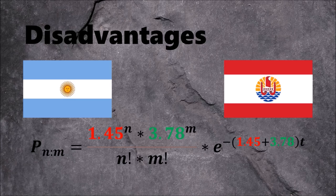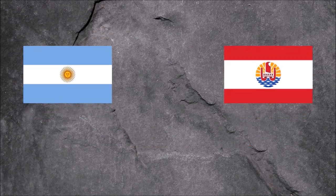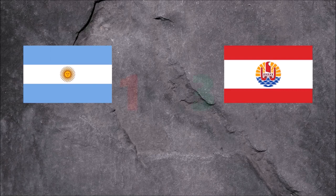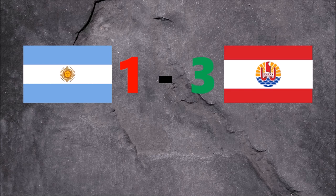What does this mean for the Poisson distribution? The highest probability for the outcome of the game would be 3 to 1 for Tahiti. And let's be honest, that will never happen.